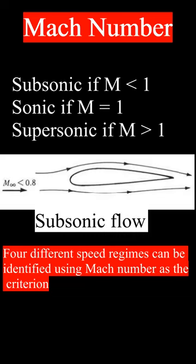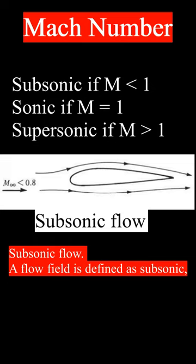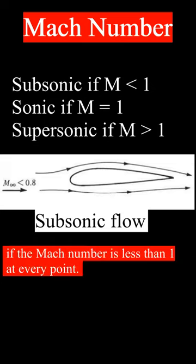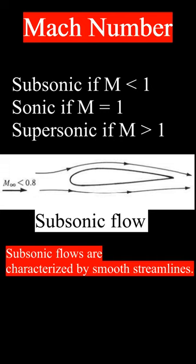Four different speed regimes can be identified using Mach number as the criterion. Subsonic flow: a flow field is defined as subsonic if the Mach number is less than 1 at every point. Subsonic flows are characterized by smooth streamlines.